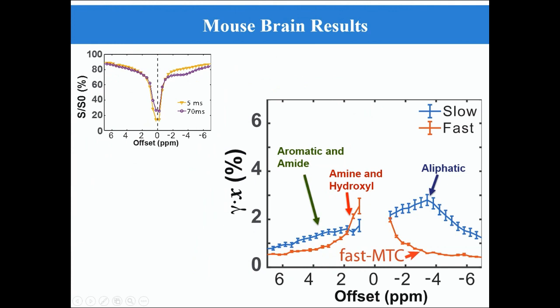Then we applied the proposed methods on mouse brains. Combined with the frequency offset information, we can assign the contribution of fast and slow exchange to different components. An interesting finding here is that there is a constant background for the separated fast exchange transfers, which we named fast MTC. This may be a new set of contrasts that have never been discovered before.